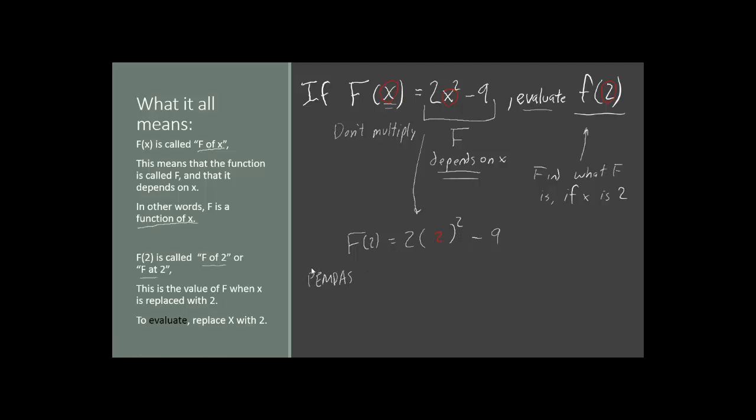Well, there's no operations in parentheses. We can check that off. We do have an exponent. 2 squared is just 4. So now our expression reads 2 times 4 minus 9. That takes care of the exponents.